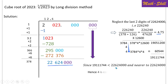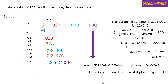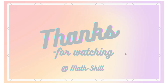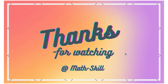Since 19111744 is less than 22624000, 4 can be considered as the next digit in the quotient. Therefore, the cube root of 2023 is approximately 12.64. Thanks for watching the video, take care.